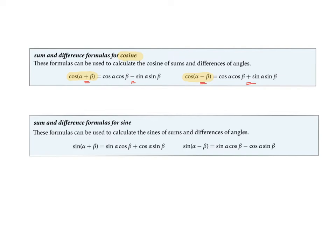We also have sum and difference formulas for sine. The sine of alpha plus beta is sine alpha cosine beta plus cosine alpha sine beta. And the sine of alpha minus beta is sine alpha cosine beta minus cosine alpha sine beta.